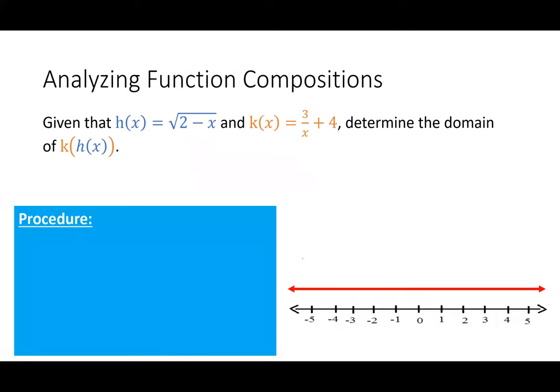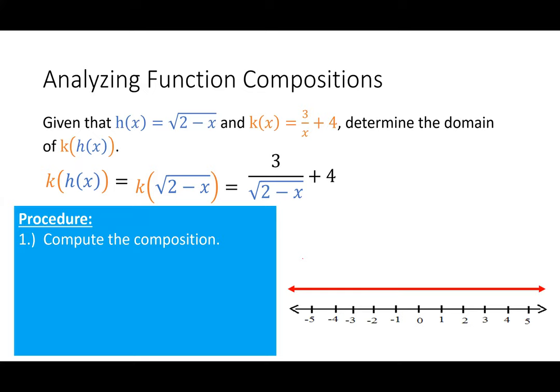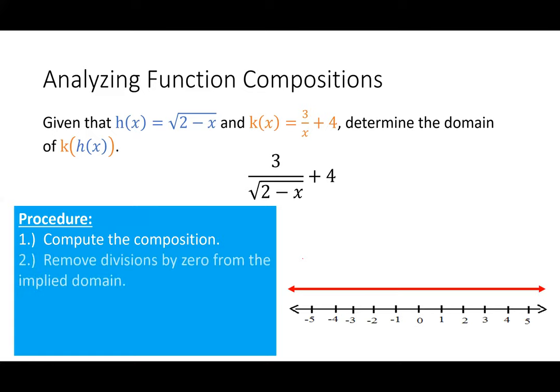Now we're going to analyze function compositions as it pertains to domain. Let's suppose I have that h of x is the square root of 2 - x and k of x is 3 over x + 4. You need to determine the domain of k of h of x. Pause the video and try this on your own. So first thing you needed to do was actually compute the composition. So, everywhere I saw an x in k, I put the equation square root of 2 - x in its place. This gave me this resulting function, 3 over the square root of 2 - x plus 4. Now from here, all I need to do is find the domain. The first thing I need to do is remove divisions by zero.